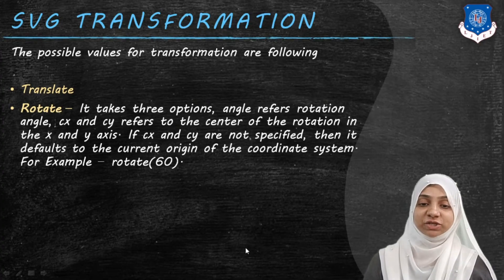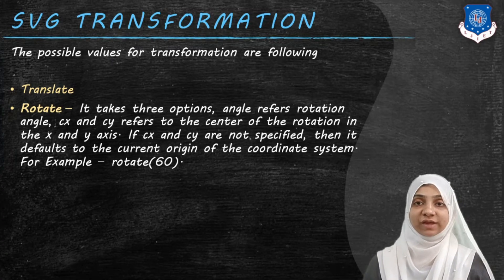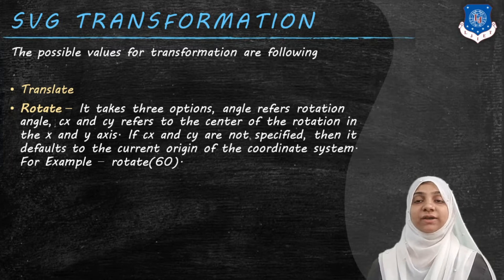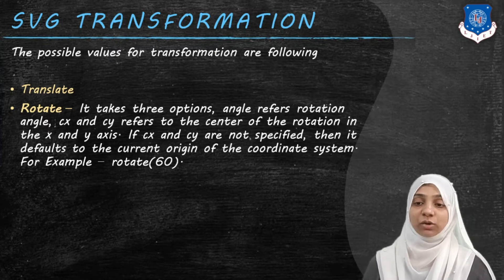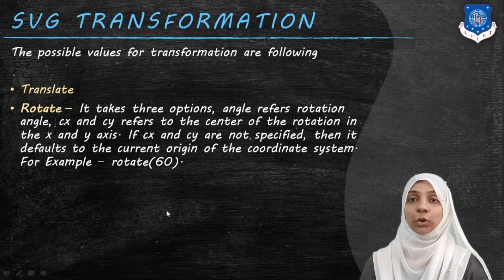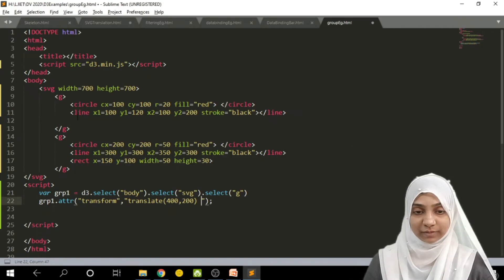Second transformation that we can apply to some group or to an individual element is rotation. Rotation of an element, let it be a group element, or it can be a single element, can be rotated in both ways, in a clockwise direction or in an anti-clockwise direction. Let us see how these elements are getting rotated.